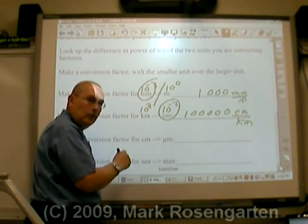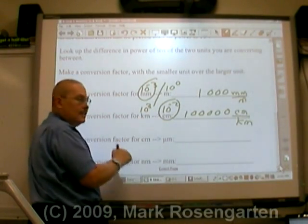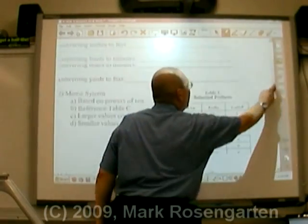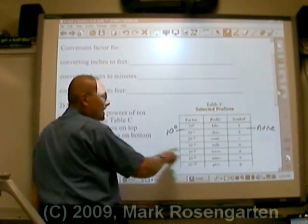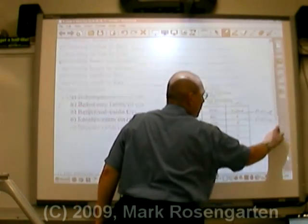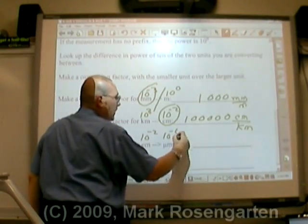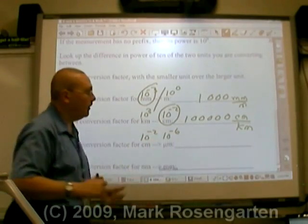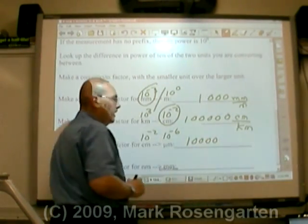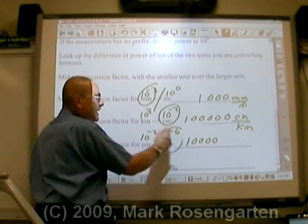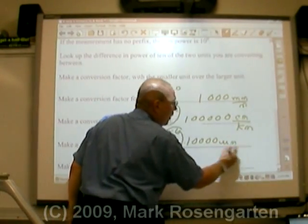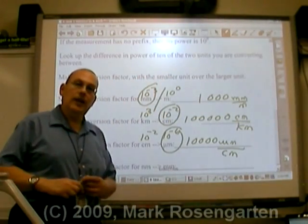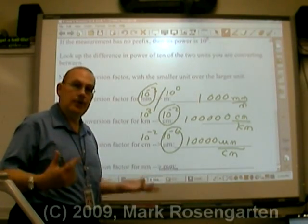To convert centimeters to micrometers, we already know that centi is 10 to the minus two. To find micro, we have to go back up to the reference table. Micro, 10 to the negative sixth. How far apart are negative two and negative six on the number line? Four apart. One followed by four zeros. And again, we put the smaller unit, micro, over the bigger unit, centimeters. And that's how you create conversion factors that you'll use to solve conversion problems.